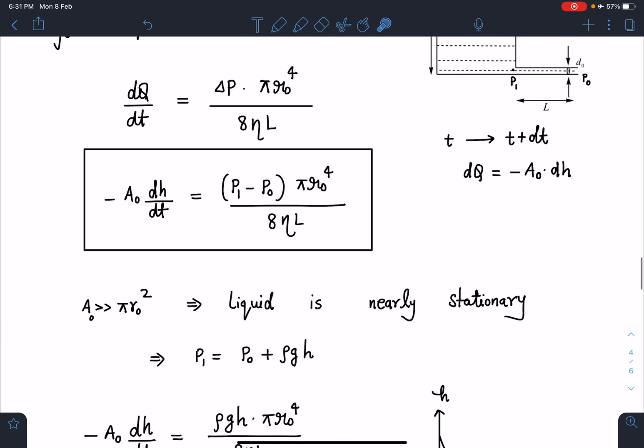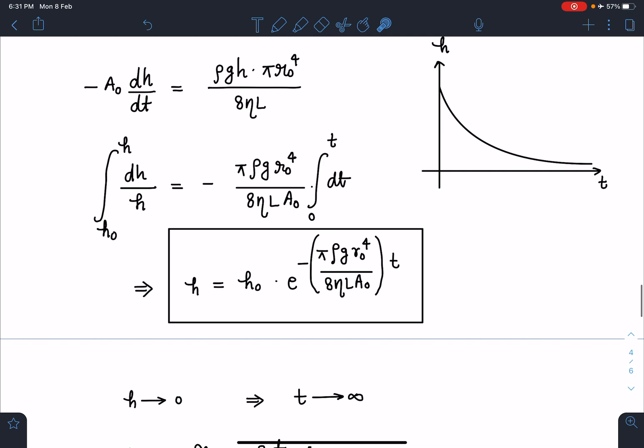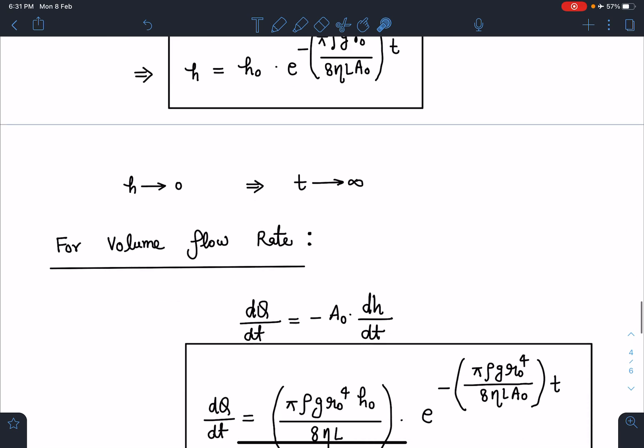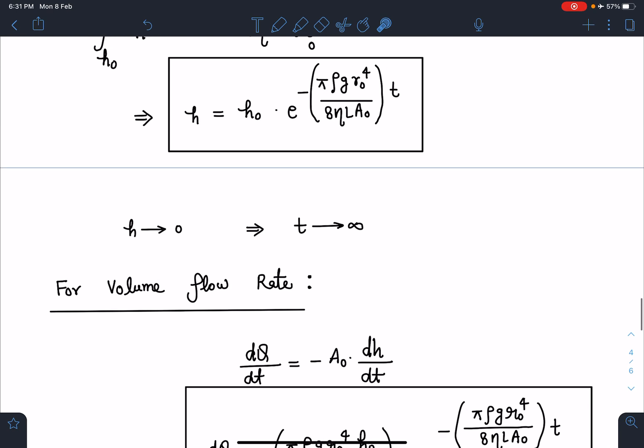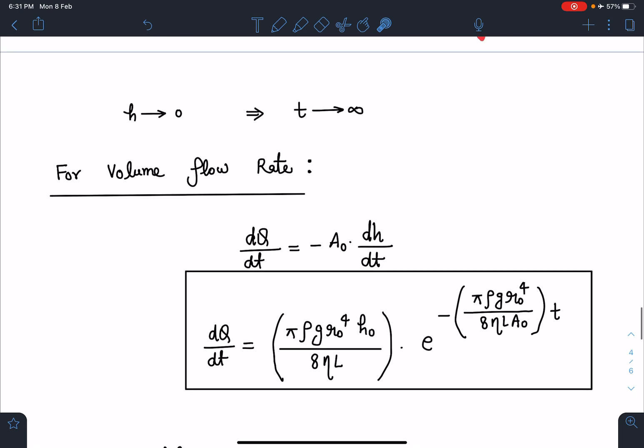Now next is volume flow rate. I am going to use this equation: -A₀ dh/dt is going to be the volume flow rate. And h as a function of time is known to you, so if you differentiate this h with respect to time and substitute here, you are going to get volume flow rate as a function of time.